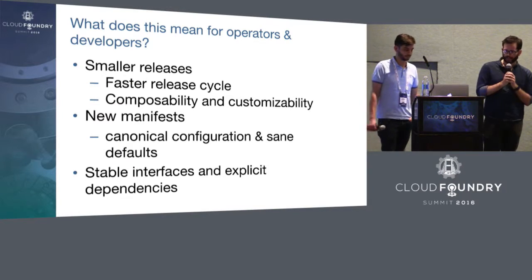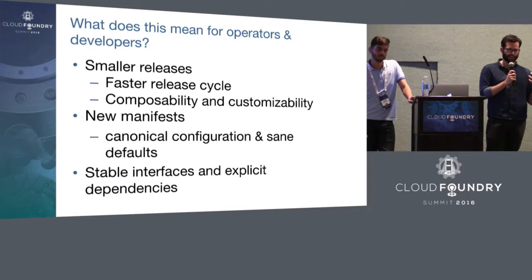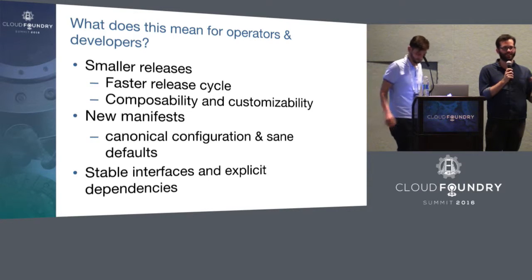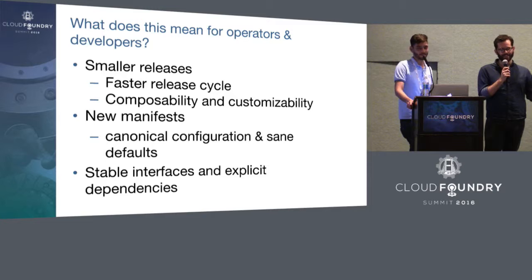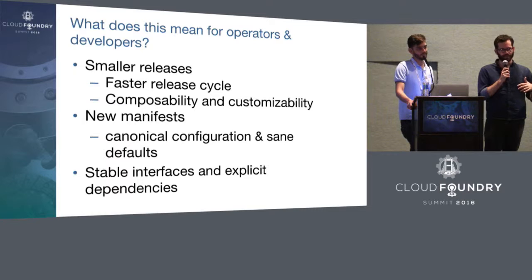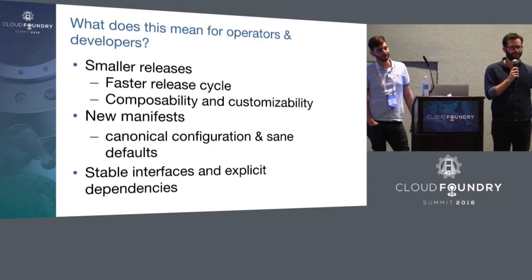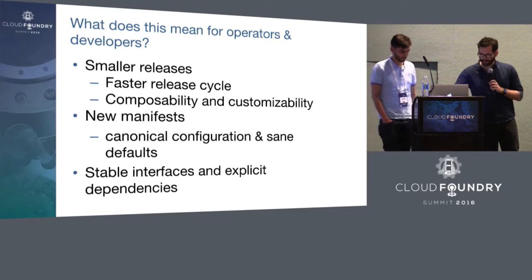We'll have a canonical configuration with the same defaults — a simple manifest. And we'll have potentially more stable interfaces and explicit dependencies. One of the things we've found as we started breaking apart CF release is all these hidden dependencies that people had completely forgotten about, lost to the sands of time. As we're splitting things out, we keep thinking, oh my god, this has a dependency on that? So we're moving toward a service-oriented architecture — the idea that you'll have a defined contract, and everyone listens to that.